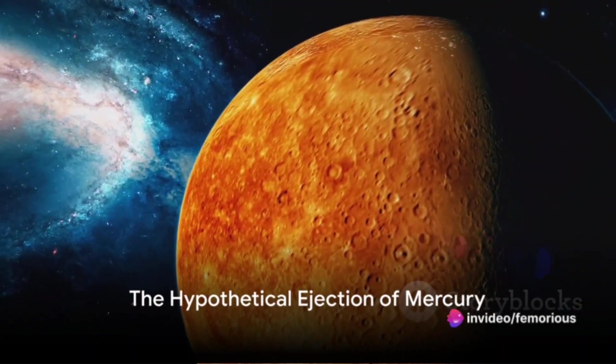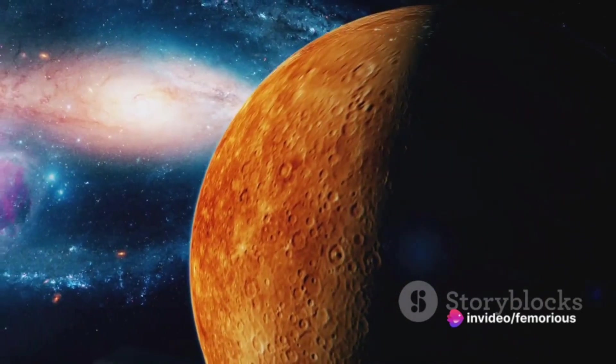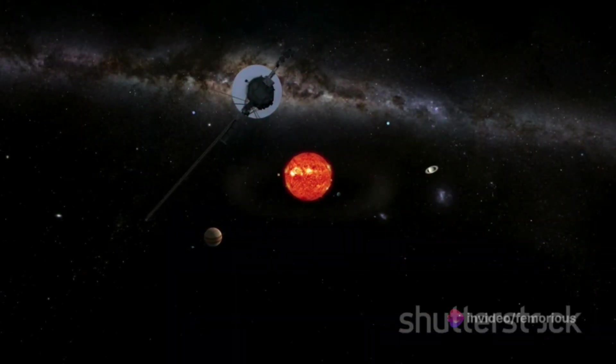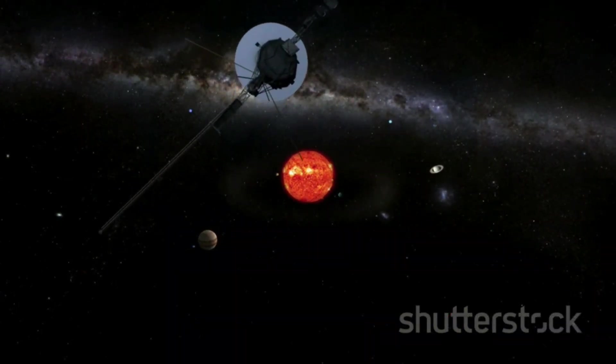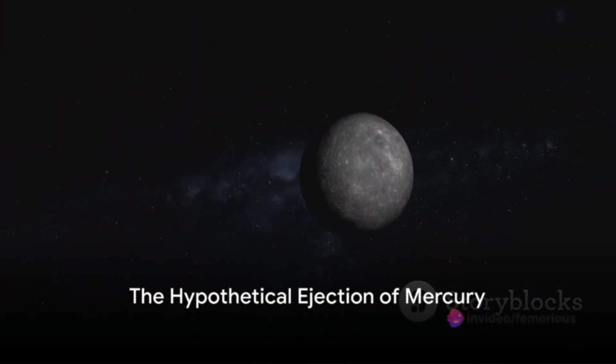Imagine, if you will, a world where Mercury, the swift and rocky planet closest to our sun, suddenly disappears. In an unexpected cosmic twist, Mercury is ejected from our solar system. What might happen in such a case? Let's delve into this fascinating hypothetical.